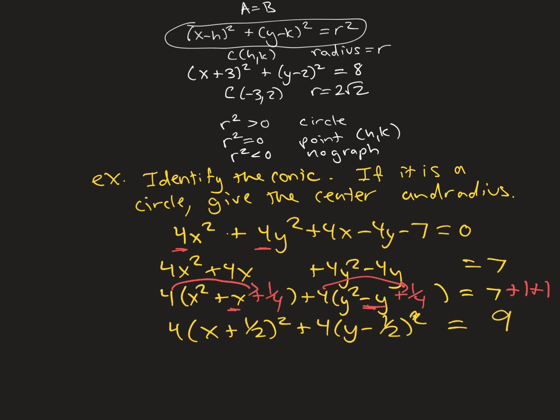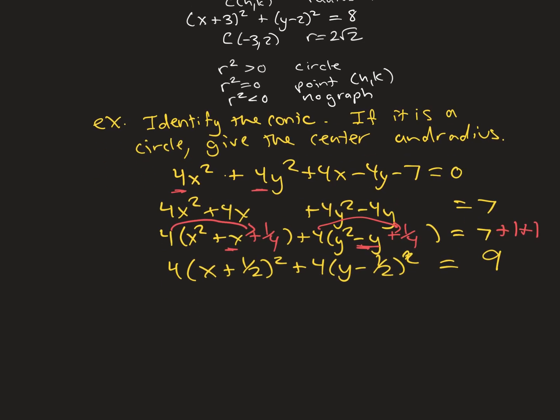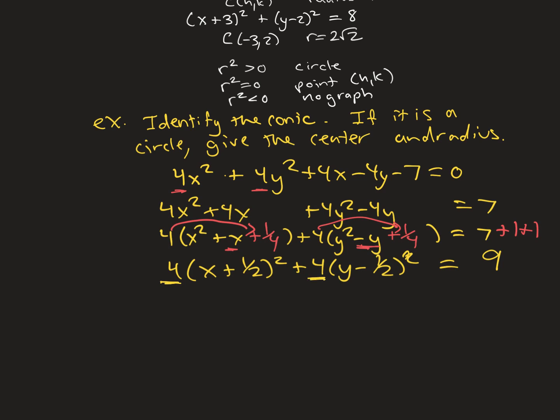The mistake sometimes that gets made here is people are like, boom, done, got my circle. No, no, no. You've got to get rid of these coefficients here. And this is where, if they weren't the same, we could not get it into the completed square form of the circle. They've got to be the same. So, I can divide both sides by 4. So, I've got (x + 1/2)² + (y - 1/2)² = 9/4.